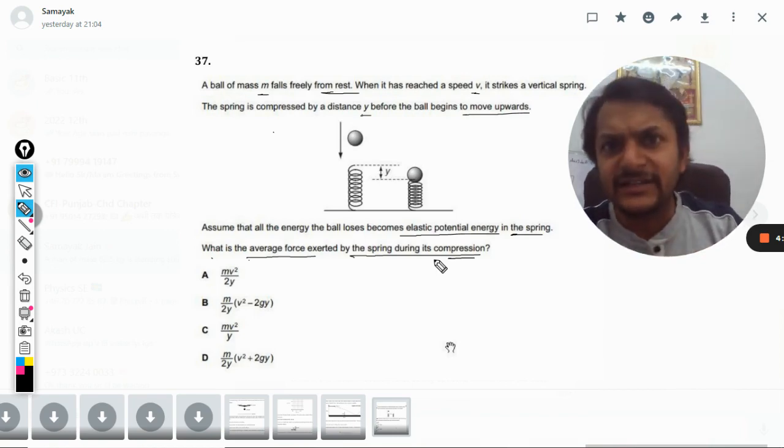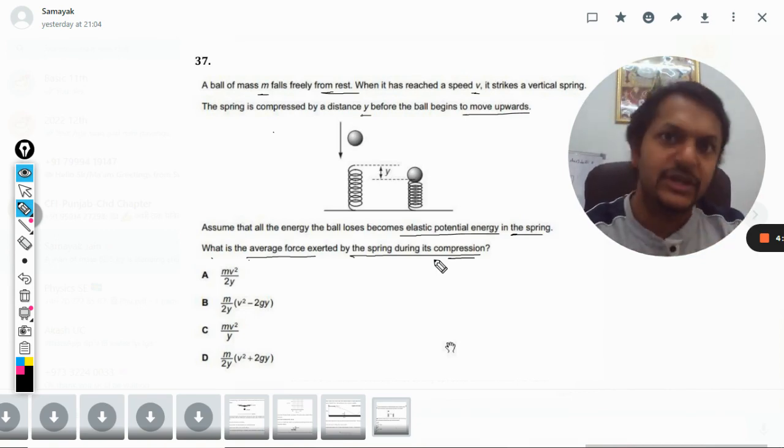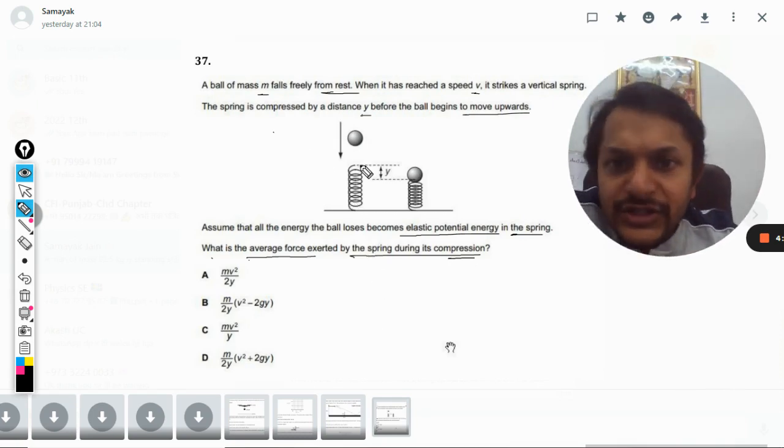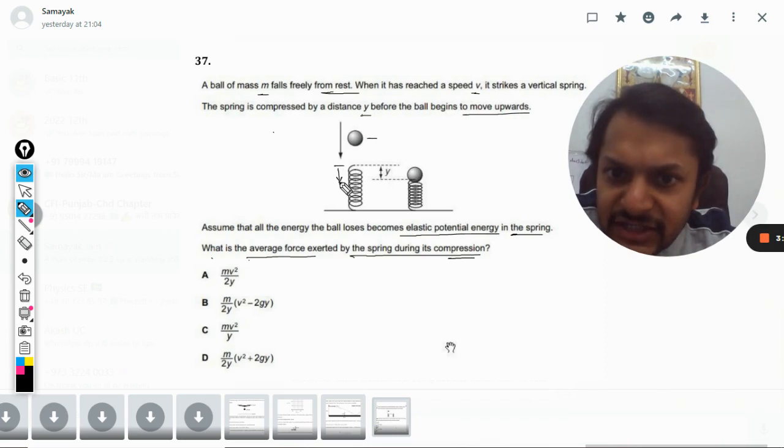It has multiple concepts involved, so this is one of the most difficult questions. Let us see how to do this question. Now the question says that this ball is falling from a certain height, so much so that the velocity it gains when it hits the spring is v.